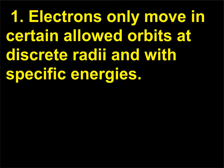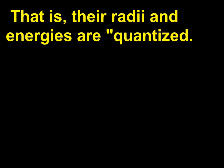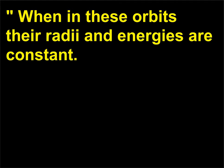Postulate 1: Electrons only move in certain allowed orbits at discrete radii and with specific energies — that is, their radii and energies are quantized. When in these orbits their radii and energies are constant, and the atoms do not emit or absorb radiation.